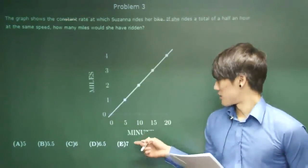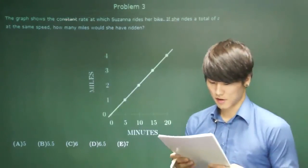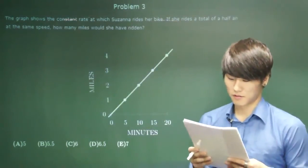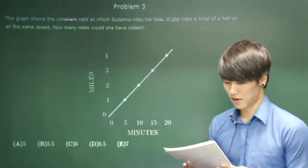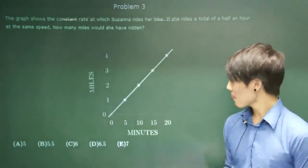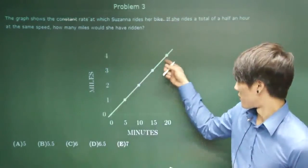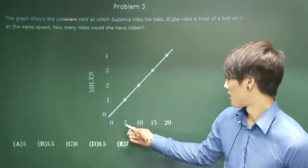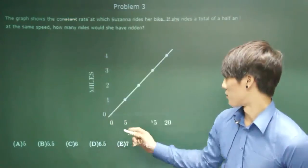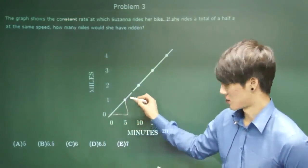So there's the minutes, the time, miles, the distance, and you have to find how many miles would she have ridden if she rides a total of half an hour at the same speed. To find it, you have to look at the slope of this line. For five, it goes up one. Using rise over run...